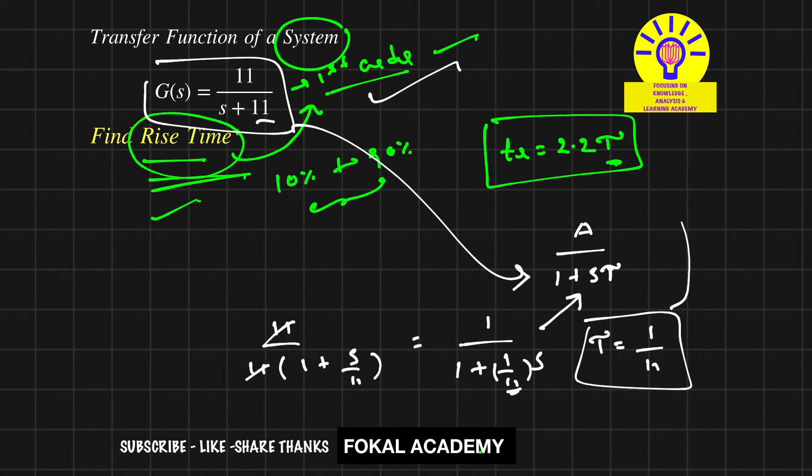Now substitute this in the formula, so then we get tr = 2.2 × (1/11), which equals 0.2 seconds.